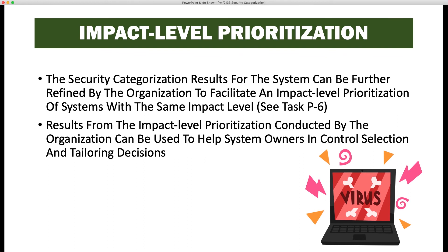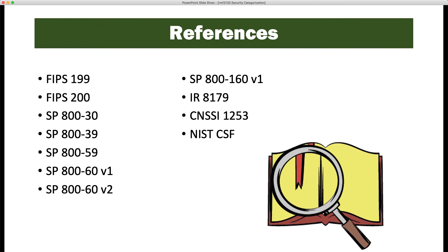The security categorization results can be further refined by the organization to facilitate an impact level prioritization of systems with the same impact level — as we discussed in task P6, where an organization with many moderate impact systems might further stratify them into high moderate, moderate, and low moderate. High moderate systems may get less tailoring and fewer control removals than low moderate systems, so a high moderate system may end up with significantly more controls than a low moderate system, even though both are at the moderate level.